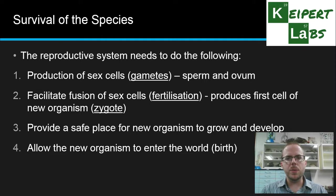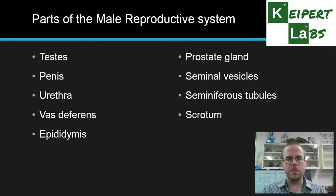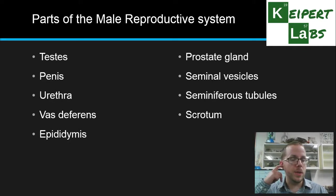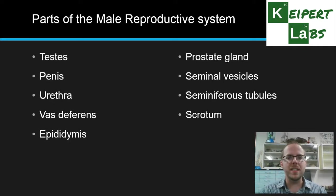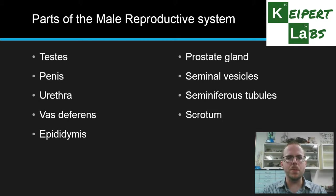Now we're going to start talking about the male reproductive system. The parts include: the testes (plural; singular is testis), the penis, urethra, vas deferens, epididymis, prostate gland, seminal vesicles, seminiferous tubules, and the scrotum.